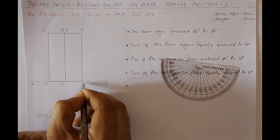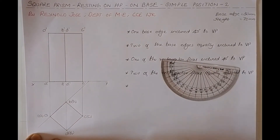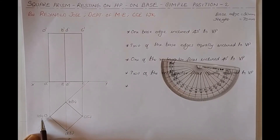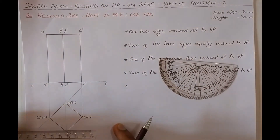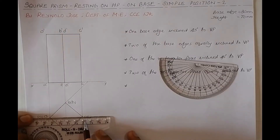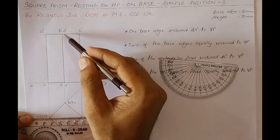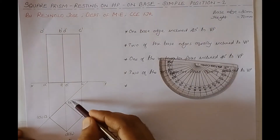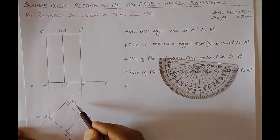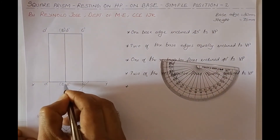Now we check which points are invisible when observing from the front view. In the top view, on the extreme left it is A and A1, and on the extreme right it is C and C1. Points between this line and the XY line — that is B and B1 — may be invisible in the front view. Since B and B1 are on the other side of the solid, in the front view B' and B1' will not be visible, so we write them in brackets.